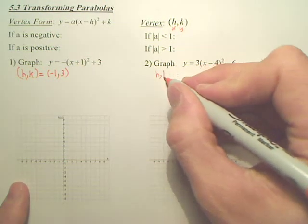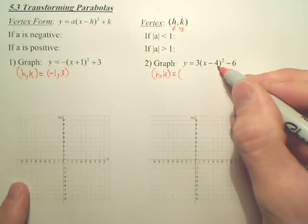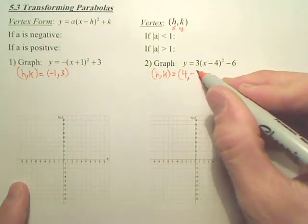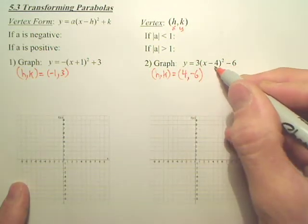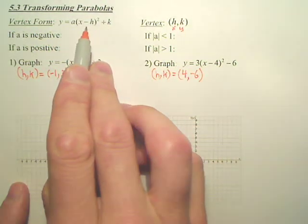Over here, what's HK, or your vertex? What's the opposite of negative 4? Positive 4. And then you leave the negative 6. You don't change that. You only change this, because it's opposite of HK. K stays the same. You change H.